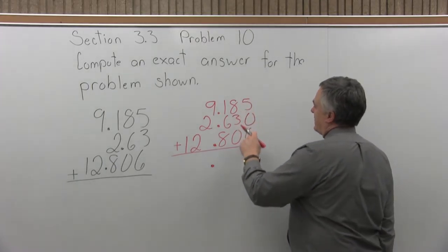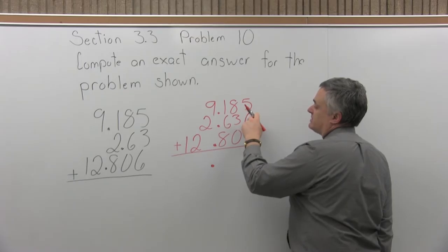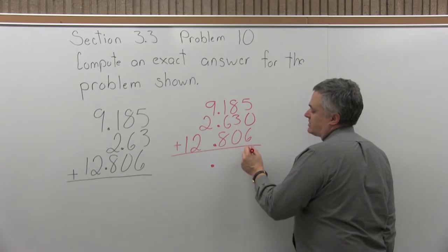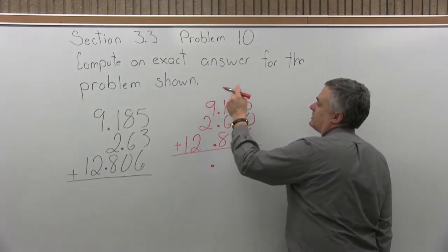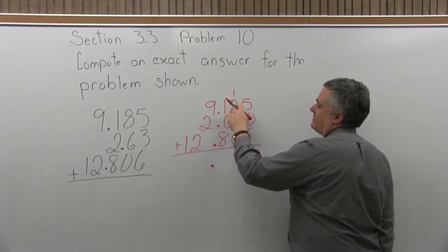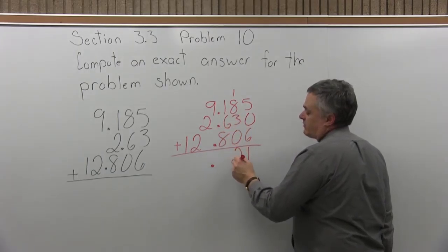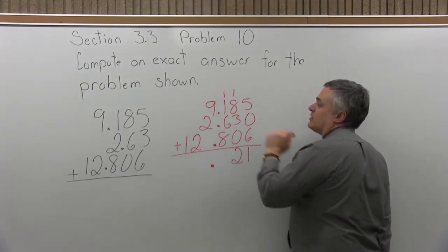Let's start adding the digits. 5 plus 0 is 5, plus 6 more is 11. 5 plus 0 plus 6 is 11. So I'll write the 1, carry the 1. 1 plus 8 is 9, 9 and 3 is 12, 12 and 0 is still 12. So for 12, write the 2 from the 12, carry the 1.